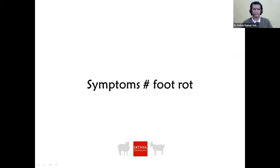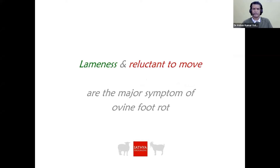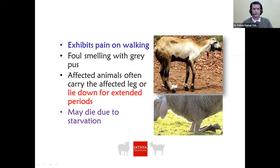The major symptoms of foot rot are lameness and reluctance to move. The animal exhibits pain on walking, false swelling with grey-colored pus, and often carries the affected leg or lies down for extended periods. Deaths are due to starvation — because of pain and lameness, the animal cannot graze sufficiently, leading to hypoglycemia and ultimately death. Therefore, glucose should be provided while treating the animal.